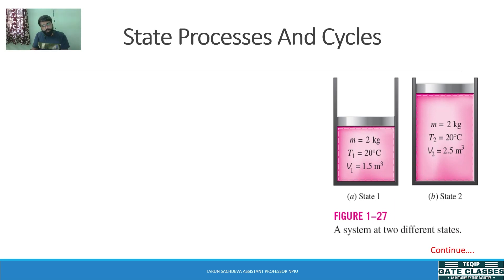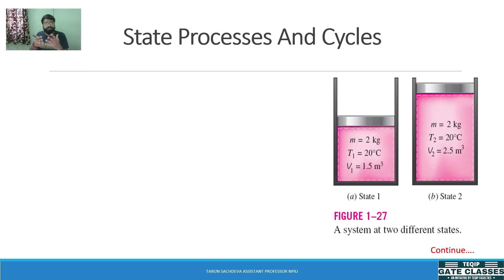We studied three types of systems: closed, open, and isolated — based on heat and mass transfer. Now the next concepts are state, process, and cycle, which we will cover one by one.